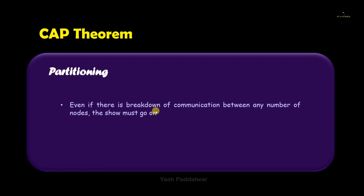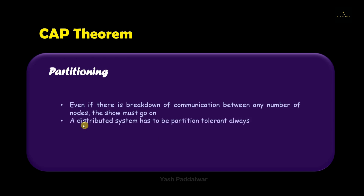Let's start with partitioning. It states that even if there is a breakdown of communication between any number of nodes, the show must go on. That means in a distributed system, if a particular node or a communication medium associated with it breaks down, the other nodes must not be affected. The other nodes and communication between them must function correctly. In short, partitioning ensures that the distributed system must always be partition tolerant.